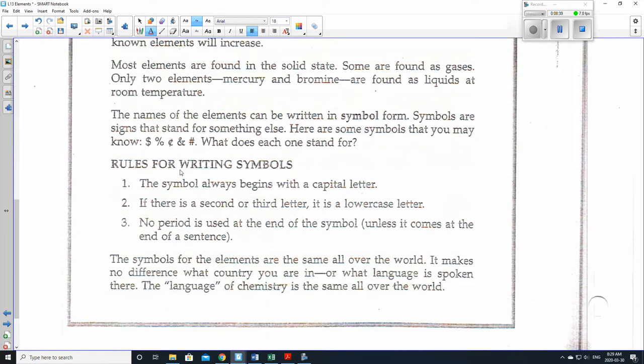So here are rules for writing chemical symbols for the elements. The symbol always begins with a capital letter. If there is a second letter, so there's never actually a third letter. So let's just cross out this part right here. If there is a second letter, it is a lowercase letter. So it's not a capital letter if there's a second letter to it. No period is used at the end of the symbol unless it comes at the end of a sentence.